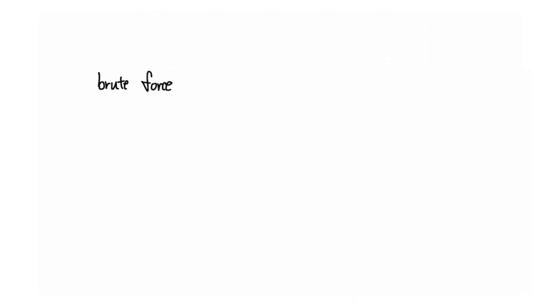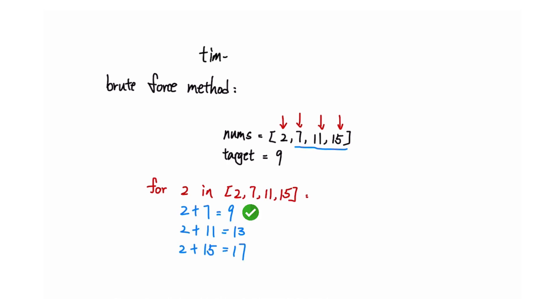One approach to solve this question is to use a brute force method. We iterate through each element i and for each element, we then iterate through the rest of the array to find the second number that adds up to the target. This approach has a time complexity of O(n^2).